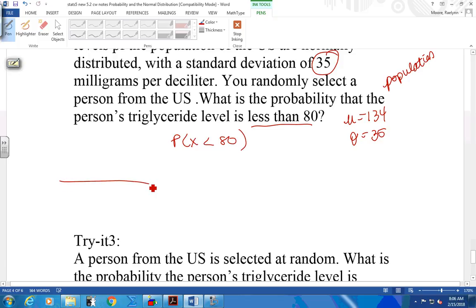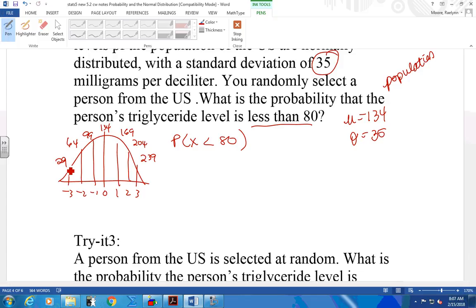So we're going to build a normal curve. I want to see these sketches. We're going to put the mean in the middle. We're going to add 35 and subtract 35. I'll put them out here because I have them this time. So where does 80 fall? Between which two standard deviations? Negative 2 and negative 1. Somewhere here.